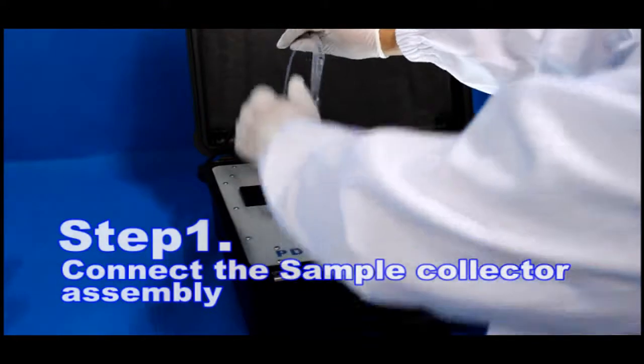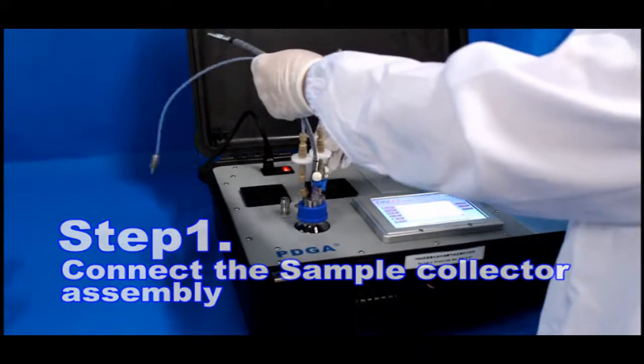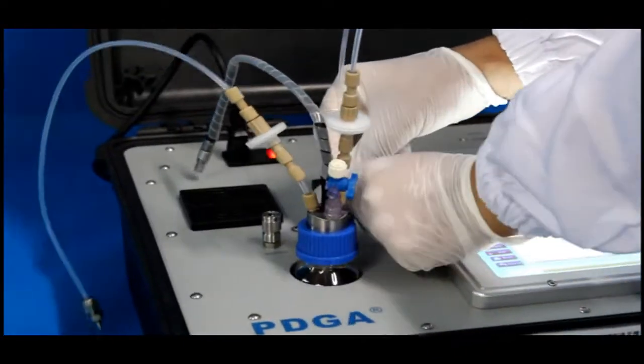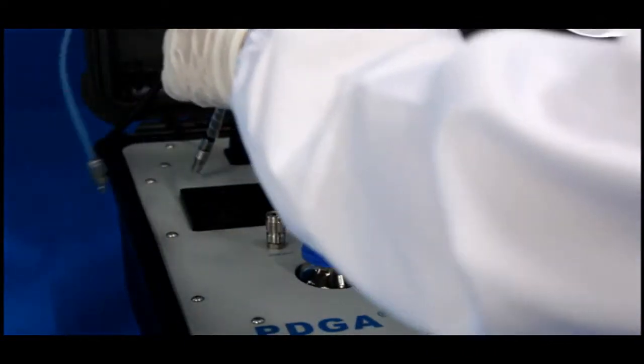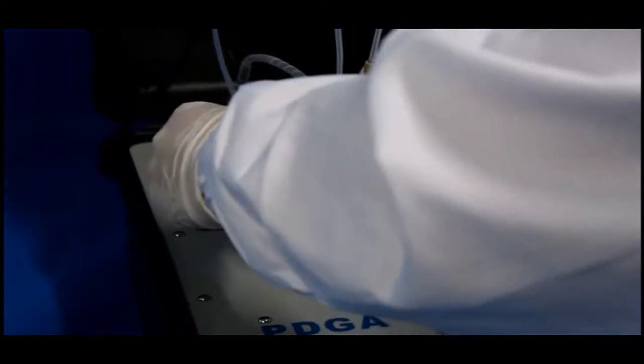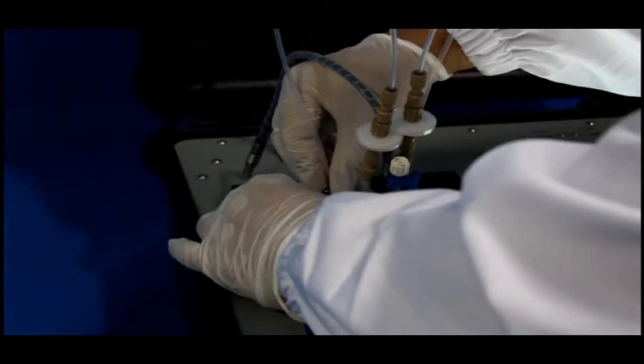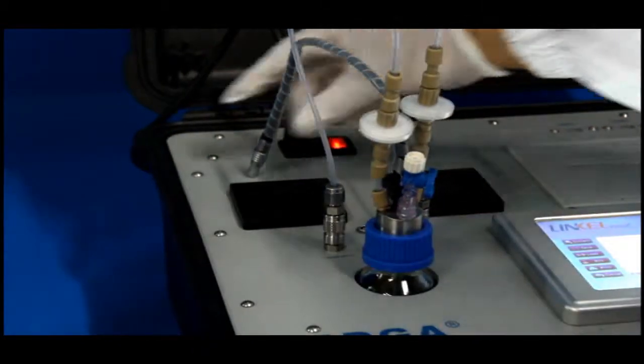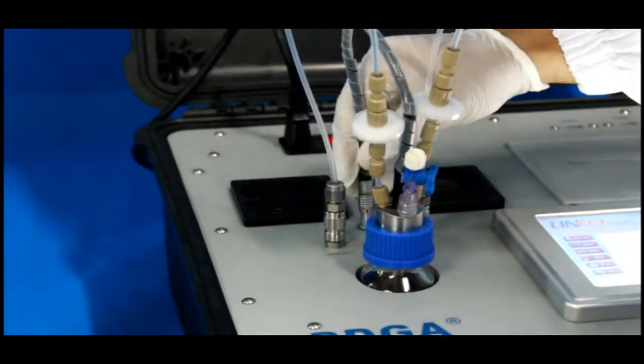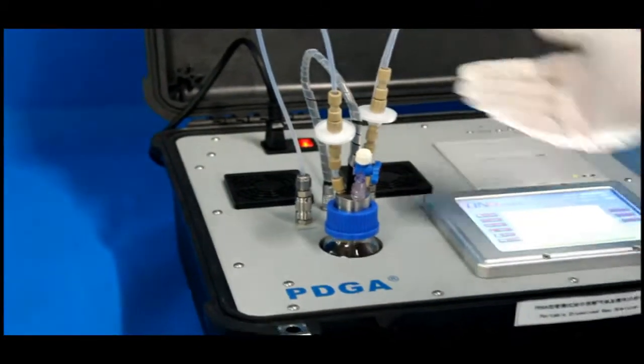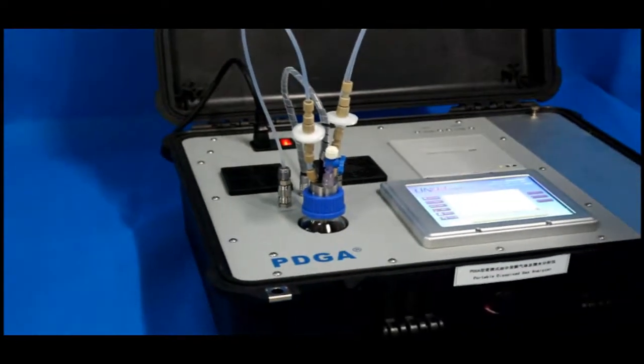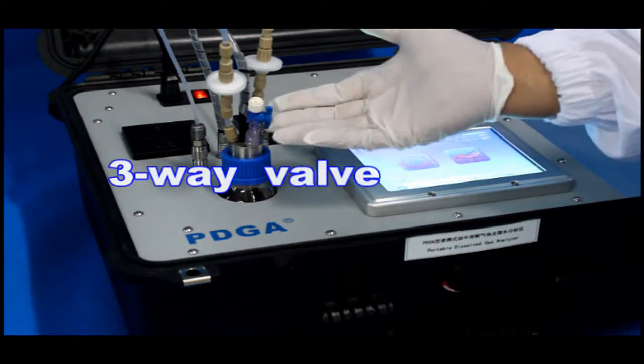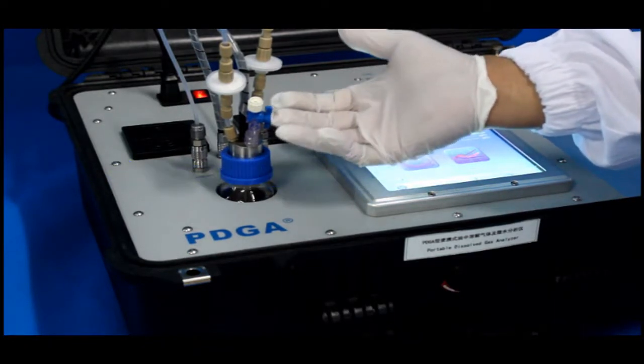Step 1. Connect the sample collector assembly to our PDGA instrument. 3-way valve allows you to inject oil into test bottle.